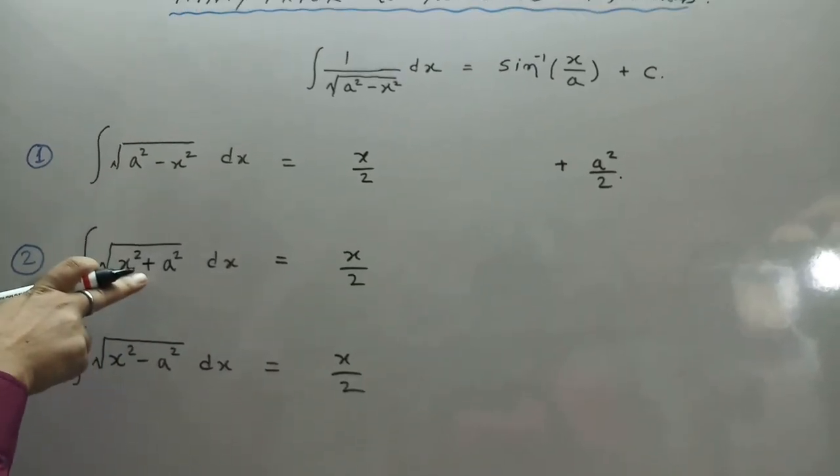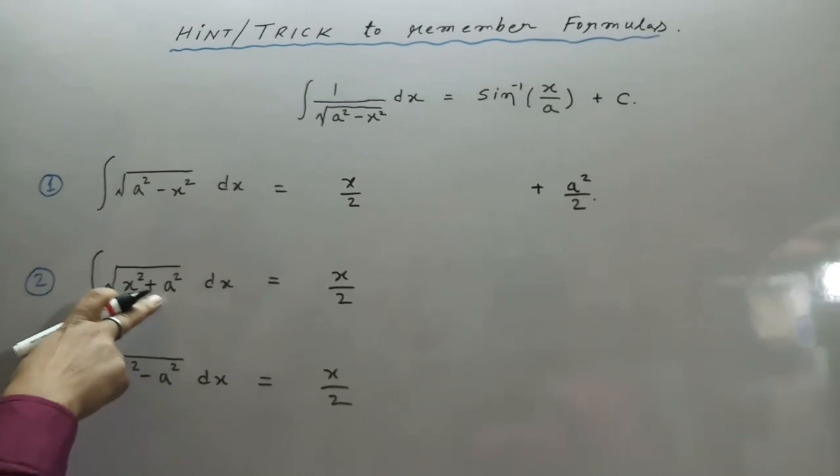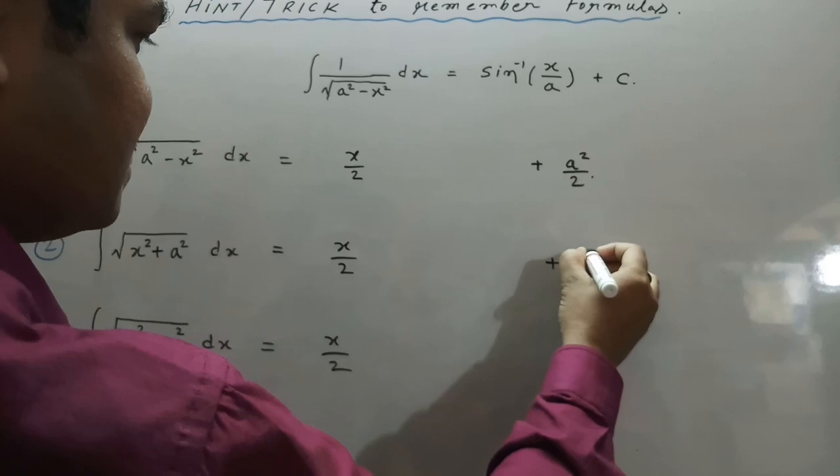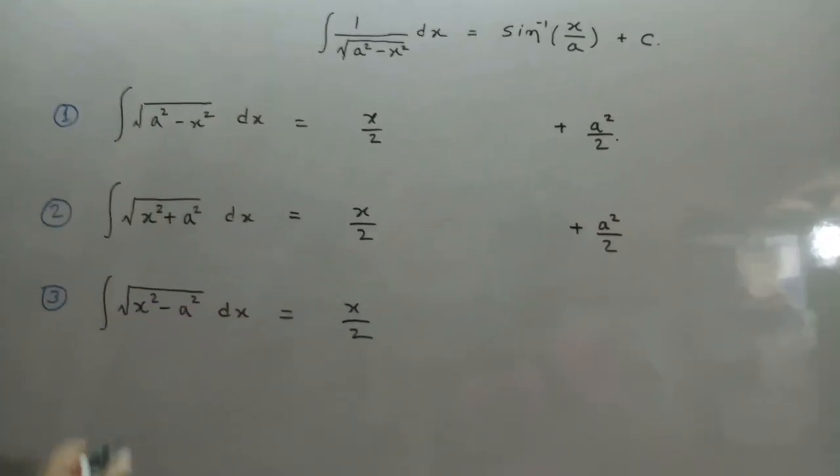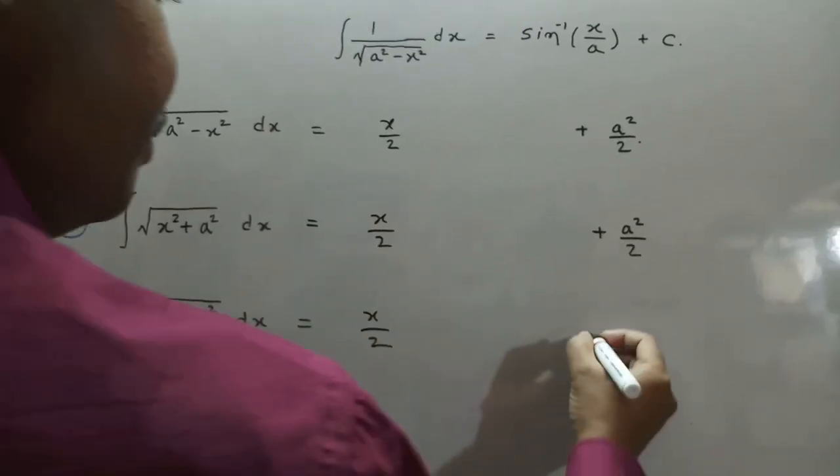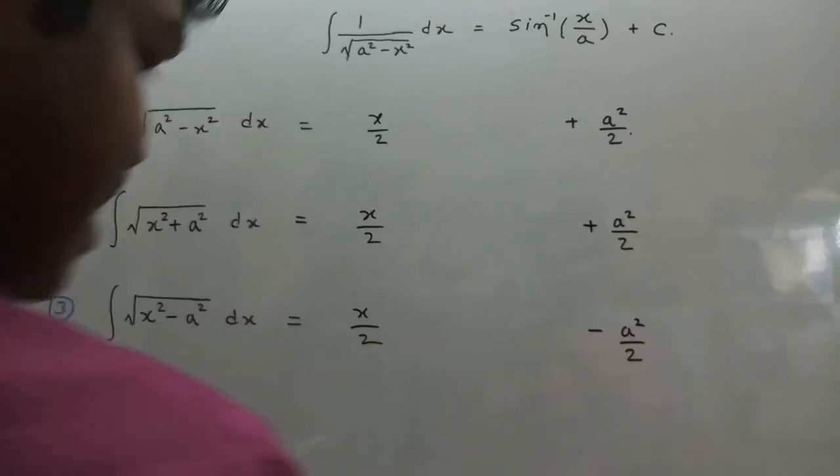Here is also plus a². In this function, this is plus a². Therefore, here also plus a²/2. Here is minus a². Therefore, write minus a²/2.